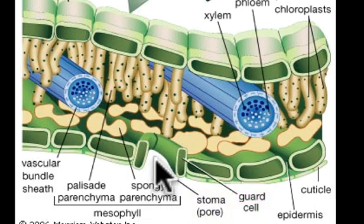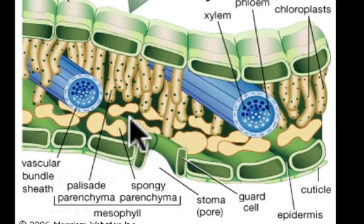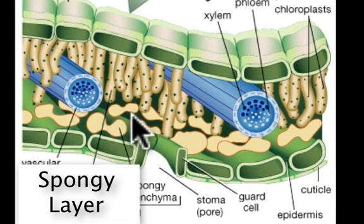If you were able to shrink yourself down and enter the leaf, you would notice there's an awful lot of empty space. This layer is called the spongy layer and is supported by cells called spongy cells or parenchyma cells, and they're simply there for structure. This layer is actually like the lungs of the leaf because it allows for gas exchange between the cells and the air.